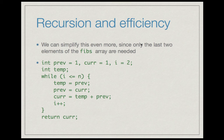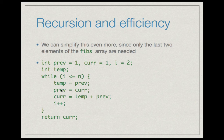We can simplify this program even more by observing that only the last two elements of the fibs array are ever needed. So you can have two variables, previous and current, storing the last two values. Then you run a loop for i = 2 to n, moving current to previous and the sum of the two variables to current. In this way you just keep track of the last two entries, and finally return the value of current.